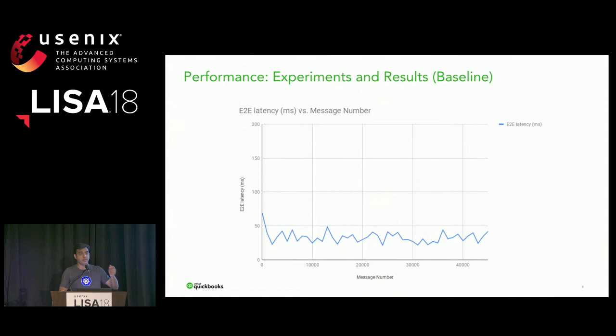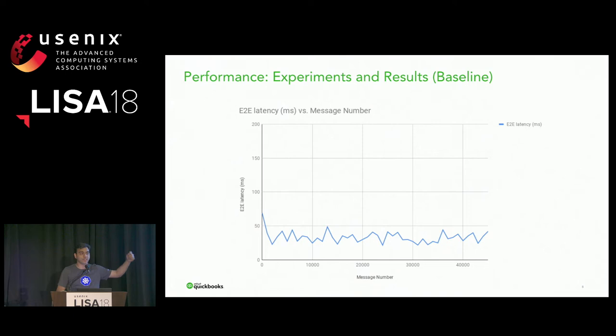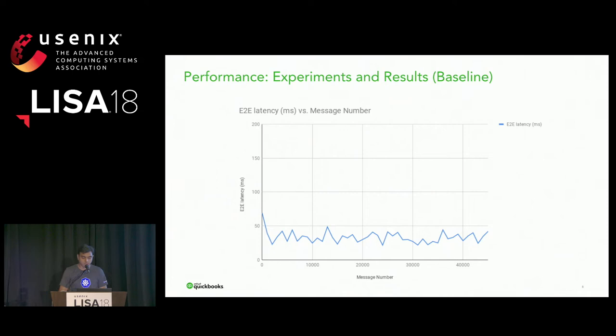We also discovered a problem in AWS: if you have IP fragmentation packets being sent and there is an AWS NAT gateway in between, that NAT gateway just drops them on the floor. One side sends a message, the other says the packet is too big — break it down — but the NAT gateway drops this so the other side doesn't know and keeps sending. We were able to fix this by explicitly setting the MTU on all components involved.